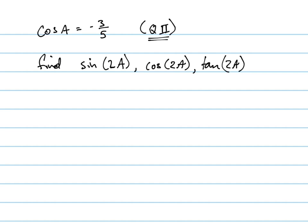So first of all, we're going to draw in our triangle. Terminates in quadrant 2 means that the angle goes in quadrant 2, because that's quadrant 2. And the cosine is negative 3 fifths, so remember the cosine is adjacent over hypotenuse.